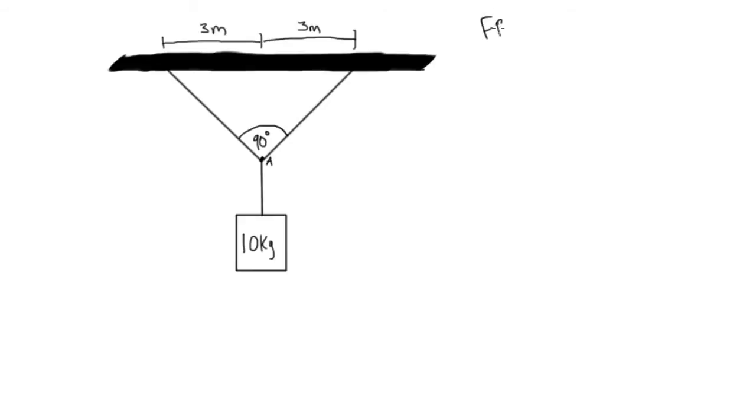So first of all we'll draw a free body diagram around point A. So we're going to have two ropes pulling up, like I said, one's kind of going in this way, one's kind of going in that way, and one is going straight down.